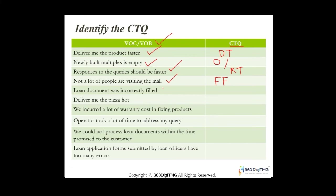'Loan documents were incorrectly filled' — the CTQ I'd target is error percentage or accuracy percentage. I'd look at error percentage and try to reduce it. 'Deliver me the pizza hot' — the metric I'd look at is temperature. I'd ensure the temperature is within a particular range; it should not be extremely hot just because the customer says they want it hot — it should be a specific target temperature.